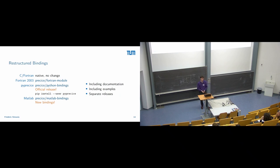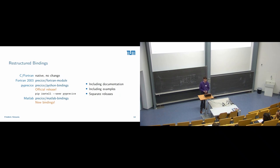Because we removed the bindings from the repository, we moved them to separate repositories — everything except our native bindings, which are the C and Fortran bindings compiled into the library. Those stay in the repository and are versioned with preCICE itself. We removed the Fortran 2003 module into a separate repository. And after a very long journey, we finally have an official release of our Python bindings. You can head to the Python bindings repository or use pip to install them — though this requires a preCICE system installation.